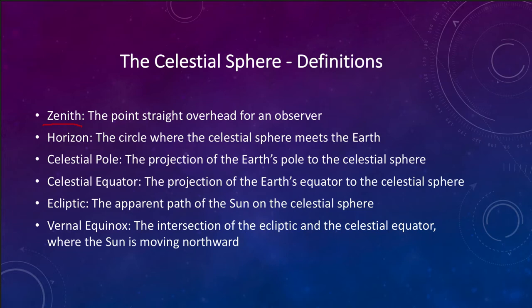For example, if you have a friend across the country or across the world and you lay out in your backyard looking straight up and see an object straight overhead and call them, they're not going to see it. That's because what is at the zenith for you will be at a different position for them. This very much depends on the location of the observer. The coordinates we talked about on the last slide are exactly the same for everybody.